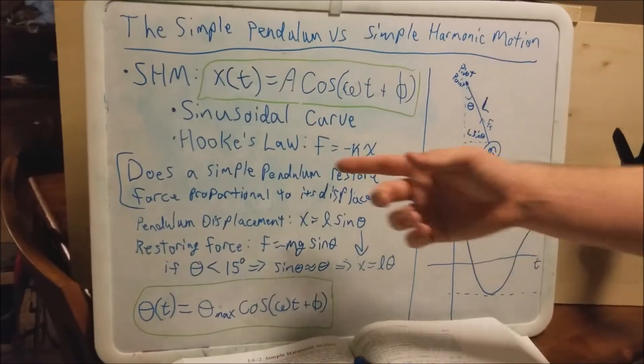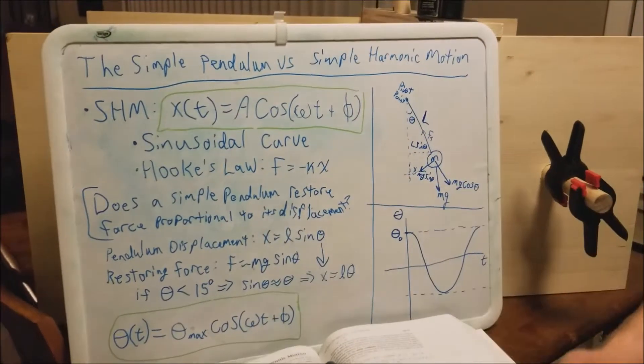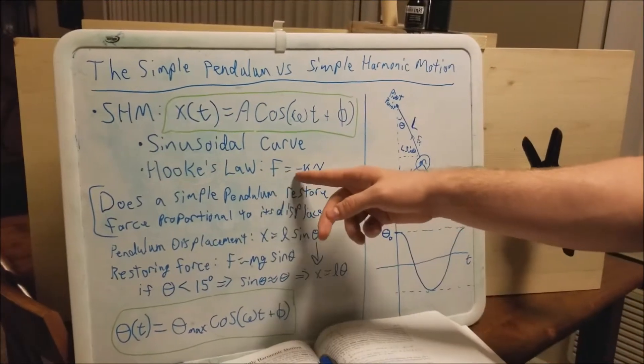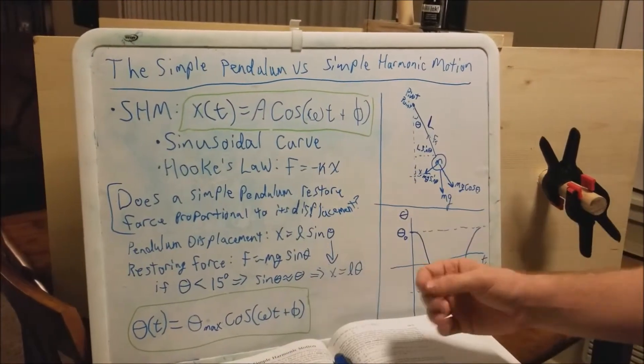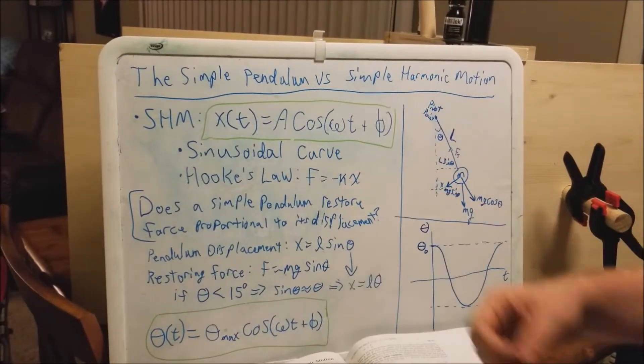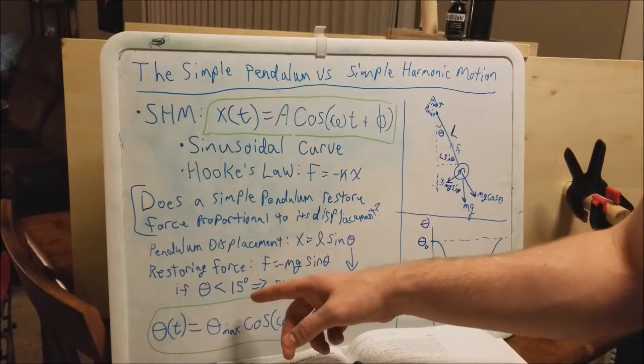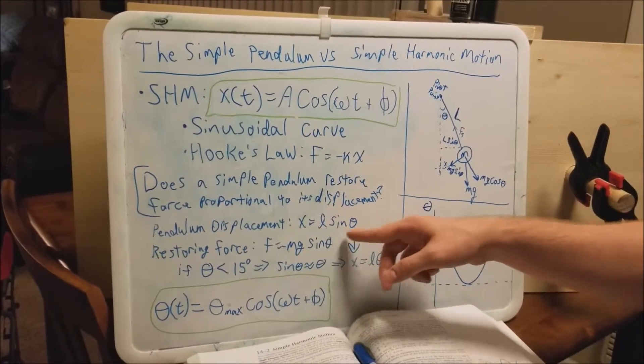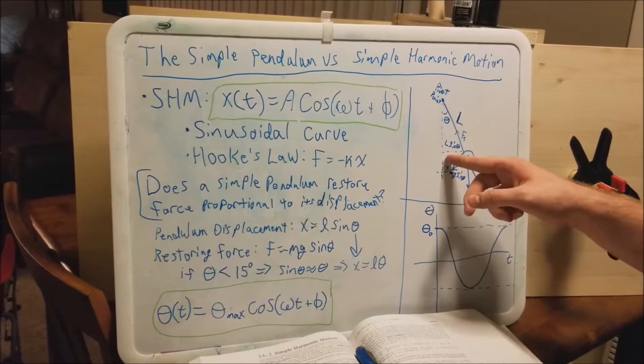What makes it simple harmonic motion is the force being negatively proportional. When we're using a pendulum, in order for it to follow Hook's law, we need our displacement, which is L sine theta, you can see here in the diagram.